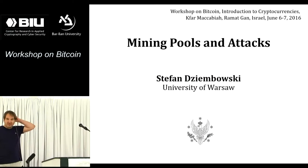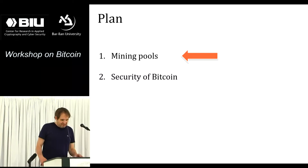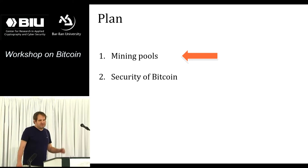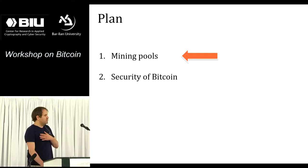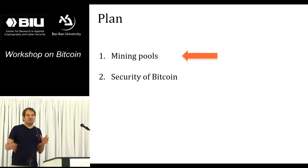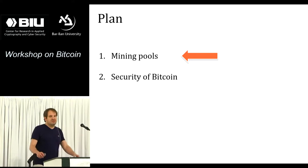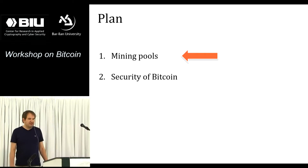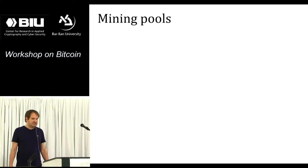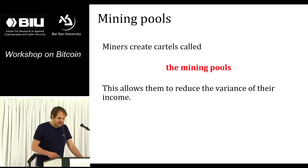Now I'm going to talk about mining pools, which is an important thing. Mining pools are coalitions of miners that mine together. I'll tell you why they do it and how, focusing on conceptual ideas from a more scientific perspective. There are some very cool ideas there - in particular, we can make a coalition of miners that is distributed without any trusted server. Then I'll talk about security, or insecurity, of Bitcoin. Mining pools are cartels of miners, and the main reason miners are interested is that mining pools reduce the variance of their income.